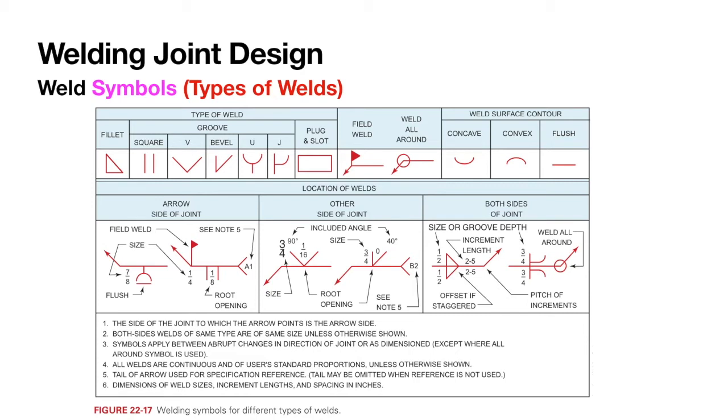A field weld is defined by the American Welding Society (AWS) as a weld made at a location other than the shop or the place of initial construction. The field weld symbol consists of a flag that is placed at the intersection where the end of the reference line meets the arrow.